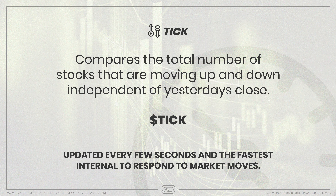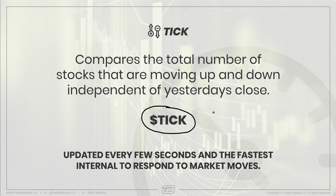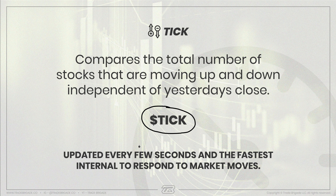The tick is the fastest indicator — it's reading what's happening at this exact moment in time. We access it on Thinkorswim by typing $TICK. This is not a shortening of any other indicators — it simply is what it is: dollar sign T-I-C-K. It's updated every few seconds, so it will respond to what the actual market is doing across all of those NYSE stocks in near real time.